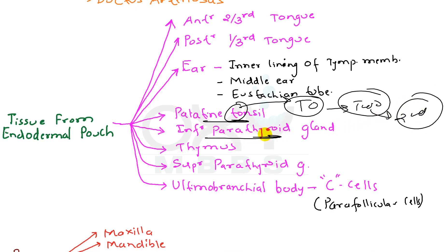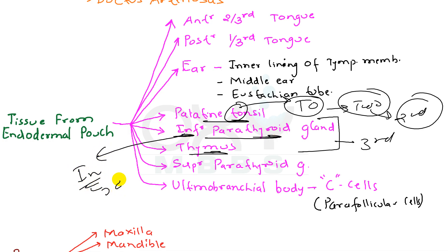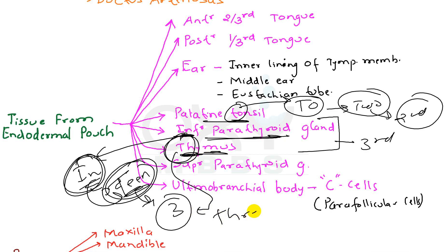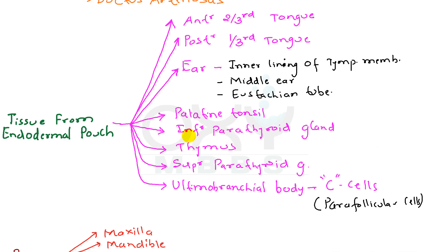Now coming to the inferior parathyroid gland and the thymus — both are derived from the third pharyngeal arch. To remember this: 'in' means 'teen' in Hindi, and teen means number three. So inferior parathyroid gland and thymus — 'in' means teen, meaning number three — are derived from the third pharyngeal arch.